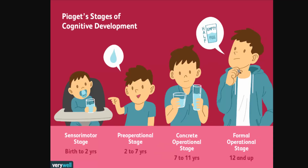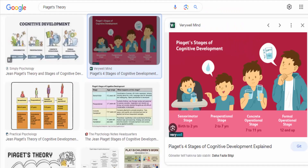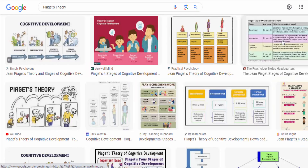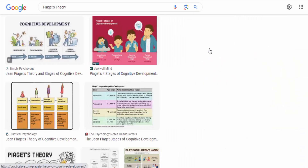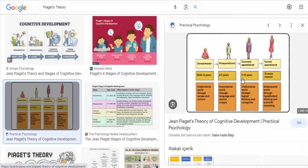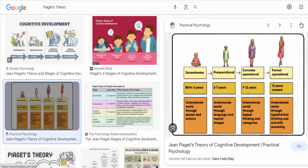Preoperational stage, two to seven years. In this stage, children begin to use symbols and language to represent objects and events. They engage in pretend play and exhibit egocentric thinking, where they struggle to understand the perspectives of others.